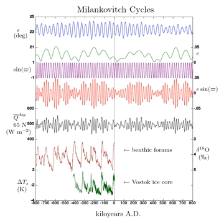Because most of the planet's snow and ice lies at high latitude, decreasing tilt may encourage the onset of an ice age for two reasons: there is less overall summer insolation, and also less insolation at higher latitudes, which melts less of the previous winter's snow and ice.